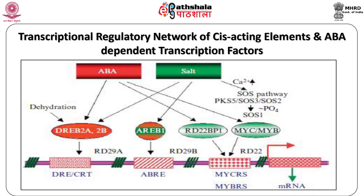Osmotic stress signaling generated by salinity stress seems to be mediated by transcription factors such as DREB2A, DREB2B, AREB1, and MYC or MYB transcription activators, which interact with DRE or CRT, ABRE, and MYCRS or MYBRS elements in the promotion of gene expression respectively. Arabidopsis MYC2 and Arabidopsis MYB2 act cooperatively to activate the expression of ABA-inducible genes such as RD22. Transcription factor binding sites are represented as rectangles at the bottom of the figure. Salinity works mainly through the SOS pathway, reinstating cellular ionic equilibrium.